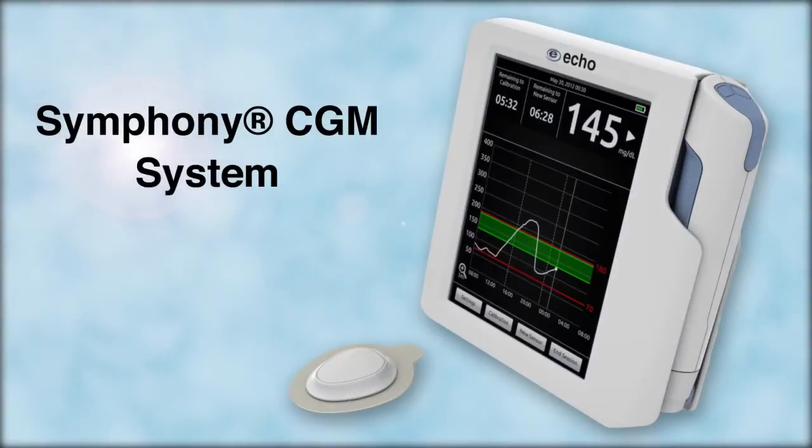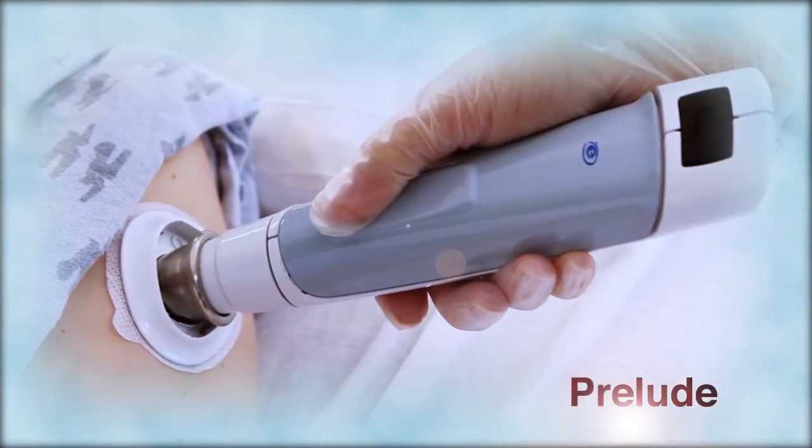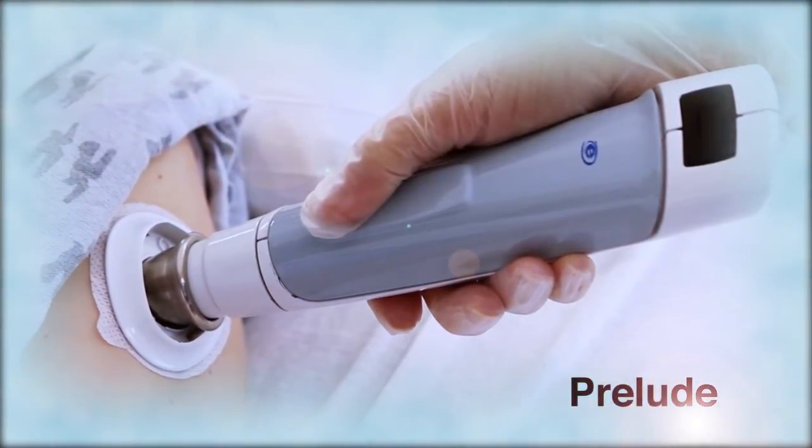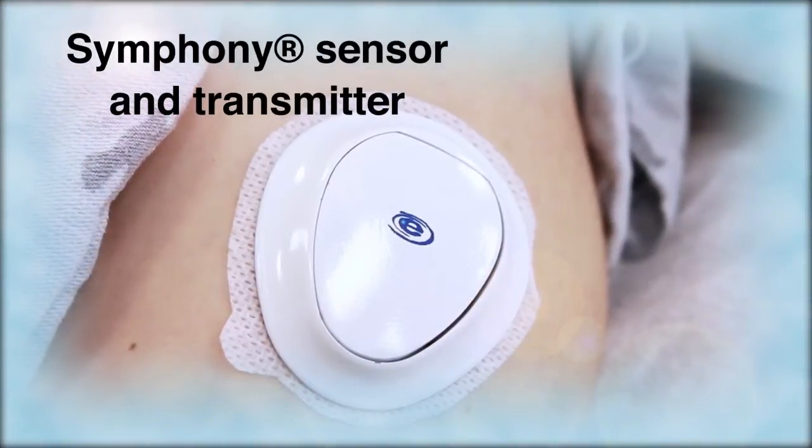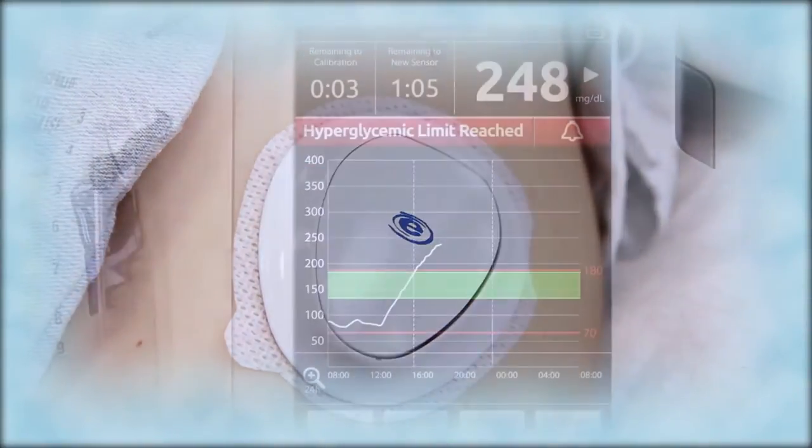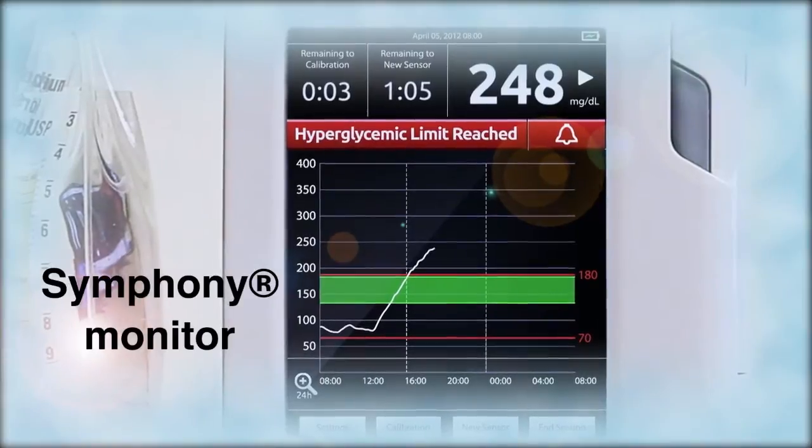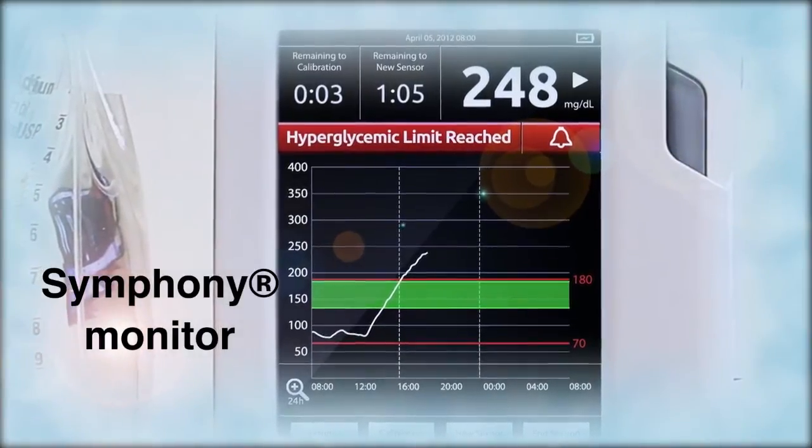The Symfony CGM system is comprised of three integrated components. Prelude, which prepares the skin using microdermabrasion. The Symfony sensor and transmitter, which measures glucose. The Symfony monitor, which receives and displays the glucose values.